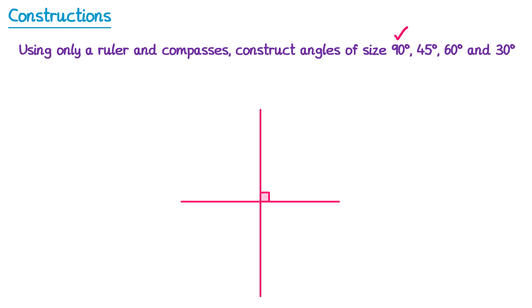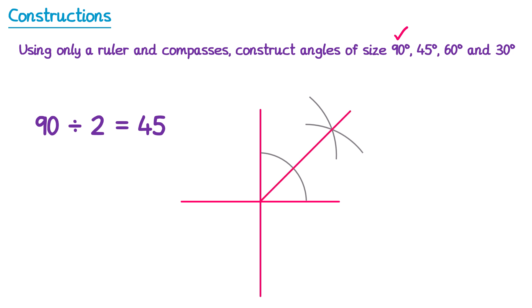What about 45 degrees? Well, if you take 90 and divide it by 2, you end up with 45. So we could split this angle into two equal sized angles and they would both be 45. So if we take this 90 degree angle and do an angle bisector, we will have made a 45 degree angle. So you can construct an angle bisector like we did earlier in this video, and this angle will now be 45 degrees.